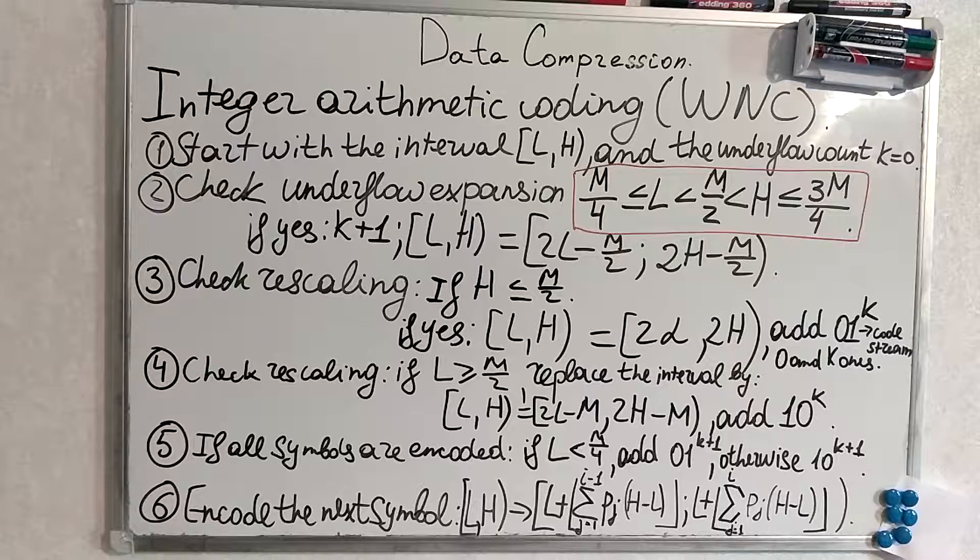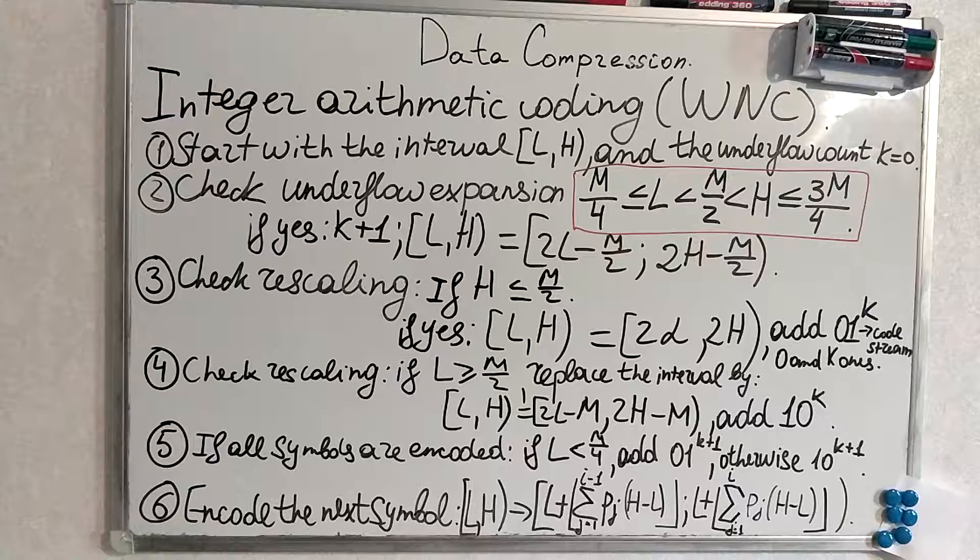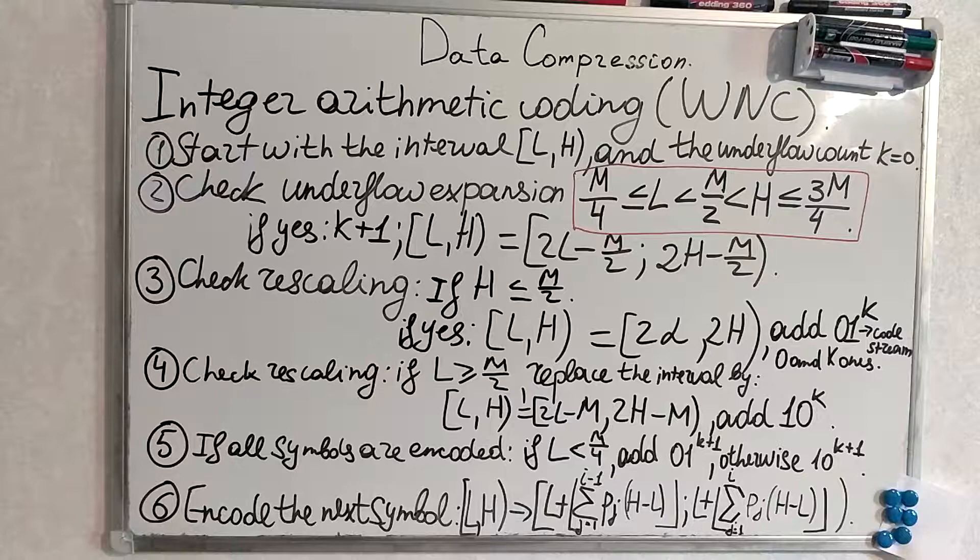If this inequality holds, we increment our k and update the interval. We check also two conditions of rescaling. If the high limit of the interval is smaller than m divided by 2.